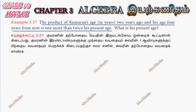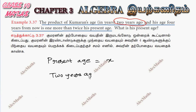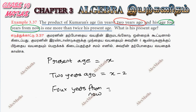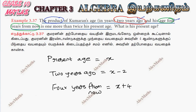Let the present age of Kumaran be x. Two years ago his age is x minus 2. Four years from now his age is x plus 4. So the product of Kumaran's age 2 years ago and 4 years from now gives us our equation.